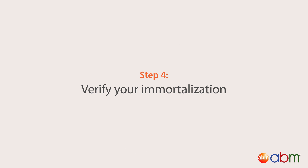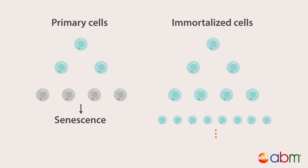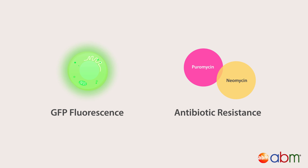Finally, to verify your cells were immortalized, passage them alongside your primary cells and observe their continuous proliferation over time. ABM considers cell lines that last 20 or more passages as immortal. If applicable, you can also test for GFP fluorescence or antibiotic resistance.